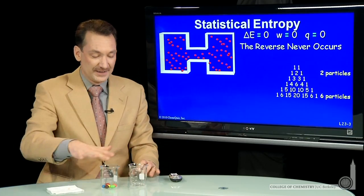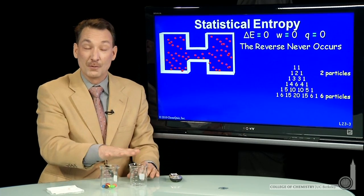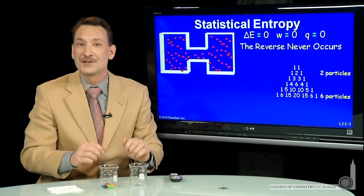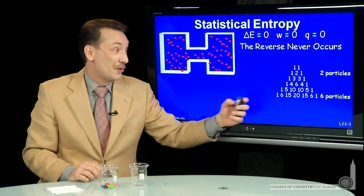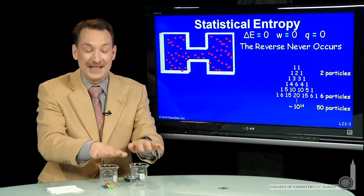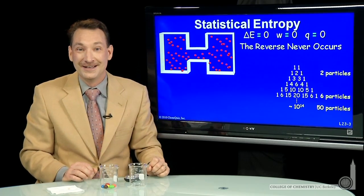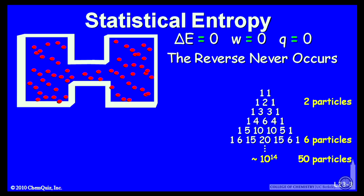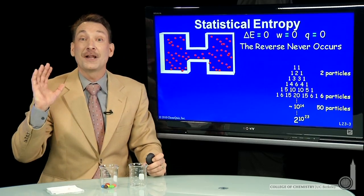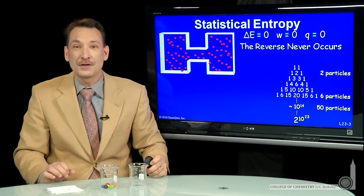If you had all these states available to you — one side, two on one side, three on this side — the most likely case is equally distributed, 20 times more likely. As you go to more particles, that becomes even more pronounced. With just 50 particles, it's already hundreds of trillions of ways to arrange the particles equally on each side — 100 trillion times more likely to see them equally distributed than all on one side. Imagine going to a mole of particles: 2 to the power 10²³ is astronomically large — bigger than the total number of particles in the universe.